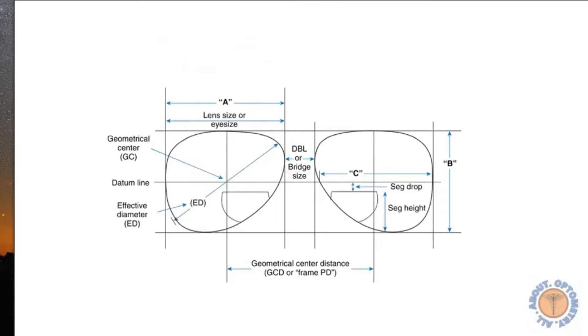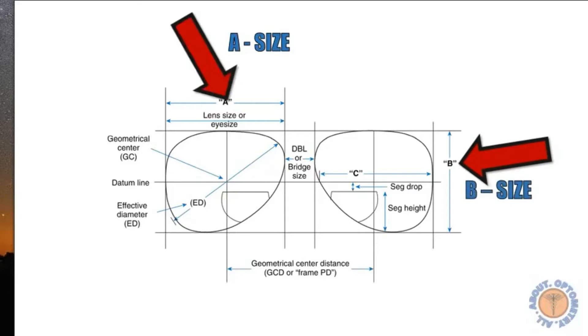When we speak about the lens size or commonly known as the eye size, we talk about the horizontal measure of the lens denoted by the letter A. Now when you take a look sideways we talk about the vertical size which is the B size, it's equally important too. It tells us about the vertical size of the optical lens.